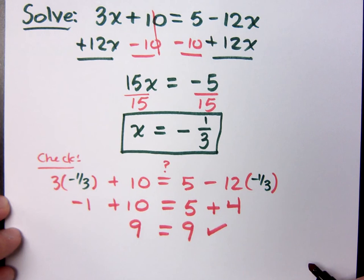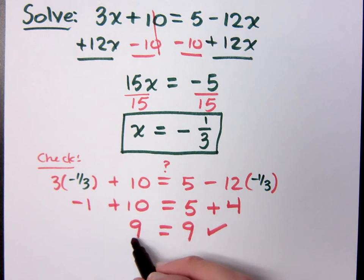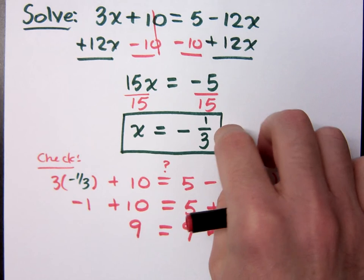What do you think? Does that check out okay? Notice when you check, you're just checking to make sure that the left and the right sides are exactly the same. Nine is not your answer. What is your answer? Negative one third.